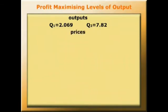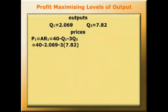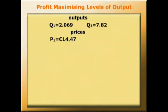For market 1, we had P1 equals AR1 equals 40 minus Q1 minus 3Q2. We now know that is 40 minus 2.069 minus 3 times 7.82, because we've already solved for the optimum level of Q for each of the two kinds of output. And this comes out at 14.47 euros. So 14.47 euros is the optimum price to charge in market 1.